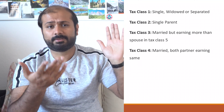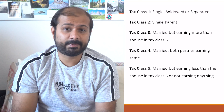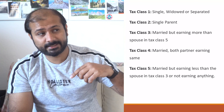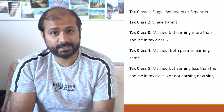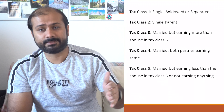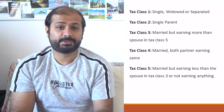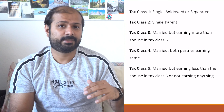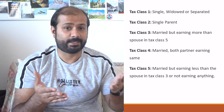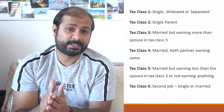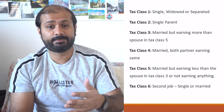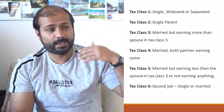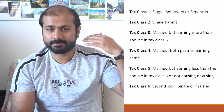Tax class 1: everybody who is single, widowed, or separated is automatically placed in this class. Tax class 2: everybody who is a single parent. Tax class 3: everybody who is married and earning higher than their spouse in tax class 5. Tax class 4: everybody who is married and both spouses are earning something similar — the same salary or maybe up to around a thousand euros difference — then both are in tax class 4.